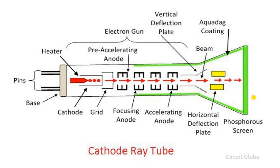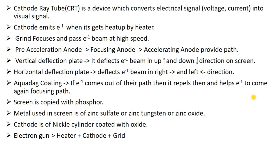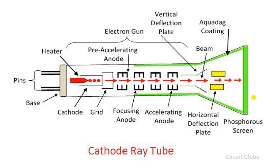So I hope you have understood what cathode ray tube is. It is a device which converts electrical signal into visual signal — this is the definition of CRT. I hope you have understood what CRT is and how it works. If you have any questions, please comment below. If you want to join our Telegram link, we give daily updates there. CRT notes — the website link is given in the description. Hit the like button, subscribe to our channel, and press the bell icon also. See you in the next video. Till then, take care, bye bye.